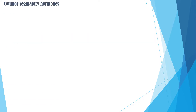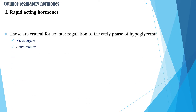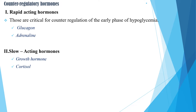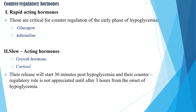When a person is affected by hypoglycemia, there are counter-regulatory hormones that try to correct hypoglycemia. They are classified into two: rapid-acting hormones and delayed-acting or late-acting hormones. Rapid-acting hormones include glucagon and adrenaline, which are critical for counter-regulation of the early phase of hypoglycemia. Slow-acting hormones include growth hormone and cortisol, and their counter-regulatory effect is not appreciated until after three hours from the onset of hypoglycemia.